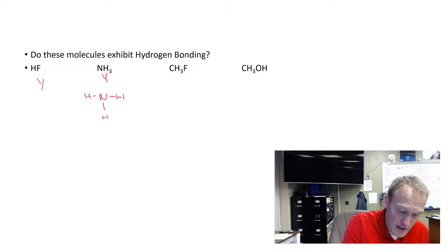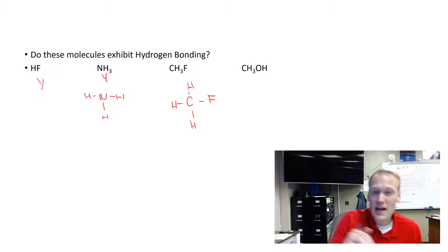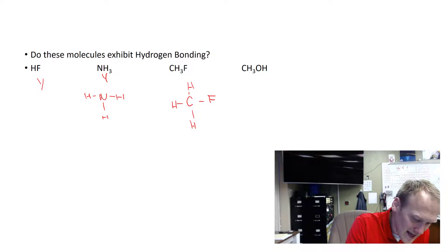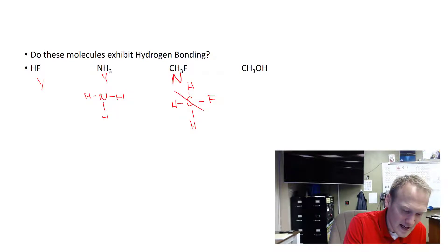This one, we have fluorine and hydrogen, and at first glance, it might seem like this has hydrogen bonding. But if we map this out, you can see that yes, we have fluorine, yes, we have hydrogen, but it's not a hydrogen bonded to a fluorine. So this is actually no. This is not hydrogen bonding.